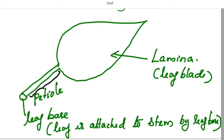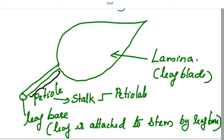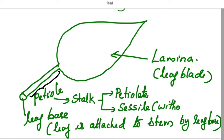The second part is petiole. What is petiole? Petiole is the stalk of the leaf. The stalk of the leaf is called a petiole. A leaf with a petiole is called a petiolate leaf, and a leaf without a petiole is called a sessile leaf. Sessile leaf means without petiole.